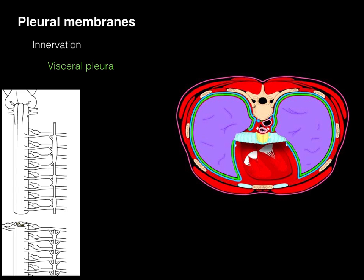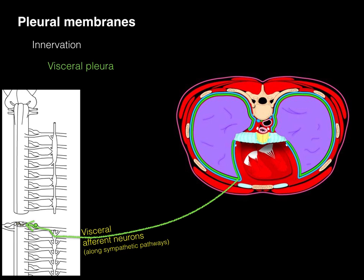The visceral pleura receives innervation as well, but because it is associated with the viscera itself, this is visceral sensory innervation. That information travels via visceral afferent neurons along sympathetic pathways into the dorsal root, and also via visceral afferent neurons along parasympathetic pathways back to the medulla. This information includes things such as stretching of smooth muscle, changes in the diameter of the airways, and damage to tissues. That completes the innervation of the pleural membranes.